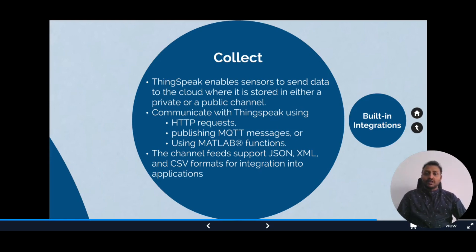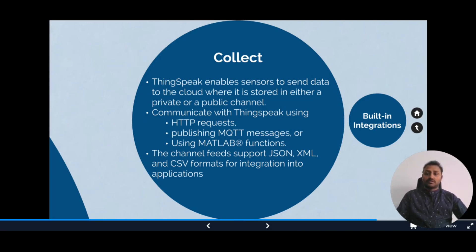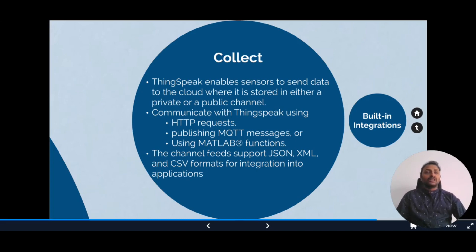You can create an account in ThingSpeak and once created, you can also create a channel to store data from the sensors. ThingSpeak stores data in private channels by default, but we can make it public so it can be shared with the public internet. You can use any internet-connected IoT devices such as Arduino, ESP8266, or Raspberry Pi to connect to ThingSpeak. We can communicate with ThingSpeak using HTTP requests such as REST APIs, publish MQTT messages, or use MATLAB functions.